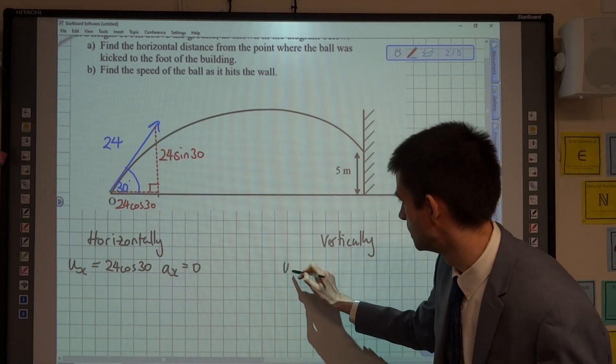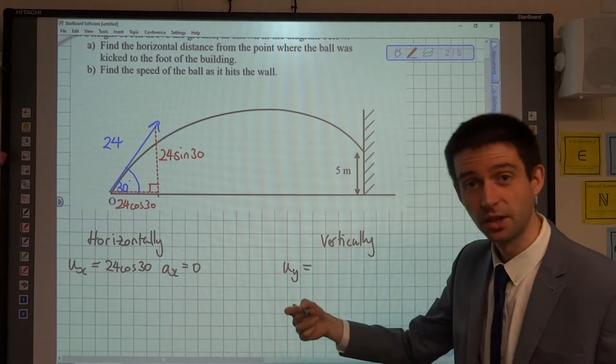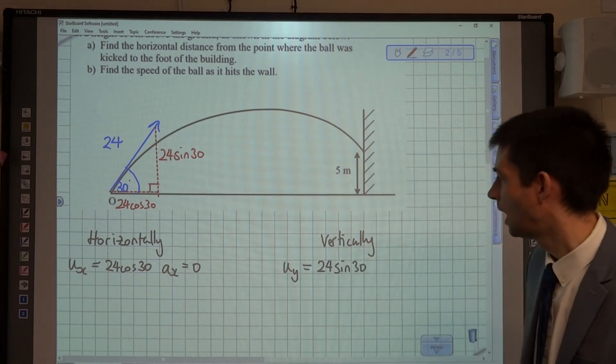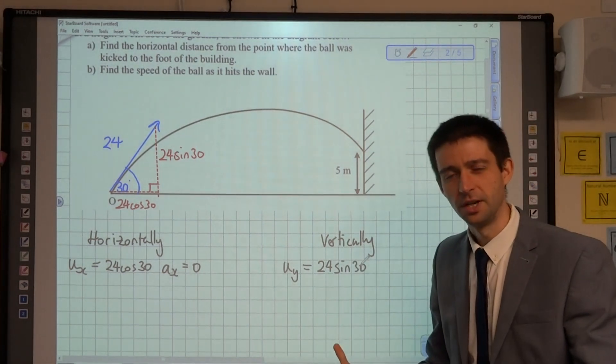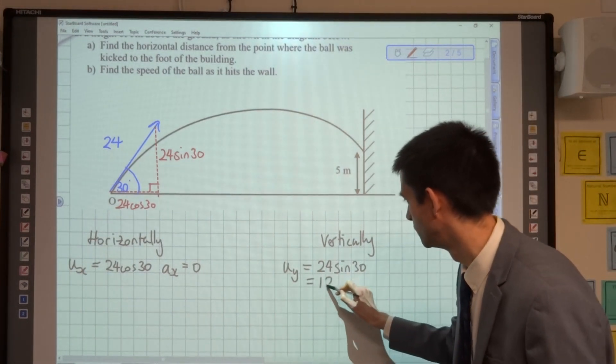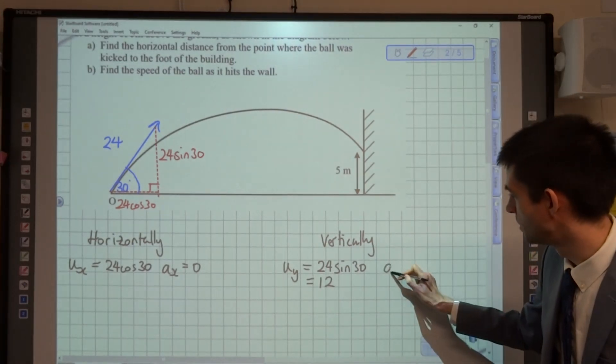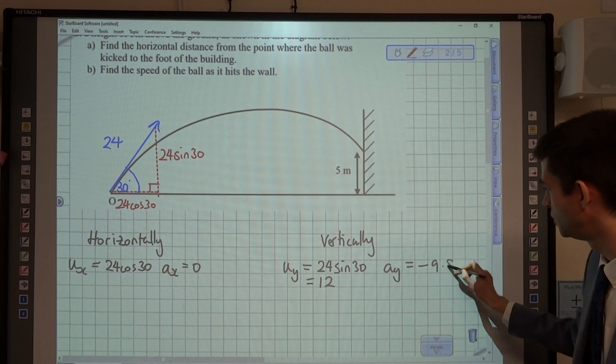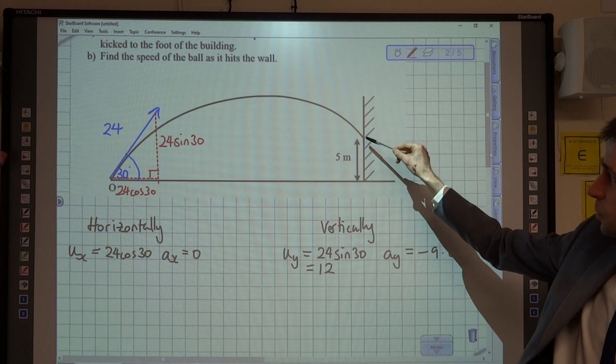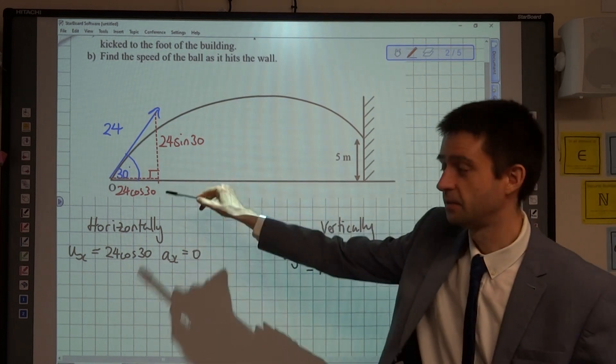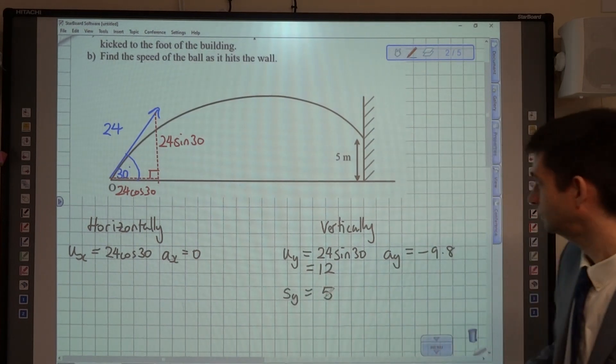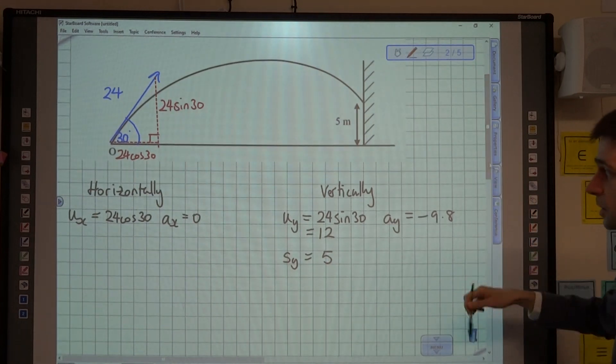Vertically, we know that the initial velocity vertically, so we call that uy, is 24 sine 30. And because you know your exact trig values, you're screaming at the screen, sine 30 is a half, Mr. Sutherland, so just write 12. So the initial velocity vertically is 12. We know that the acceleration is negative 9.8 because it's due to gravity. We don't know the time, but we do know the displacement, because we're looking for this point here where it's 5 metres above the starting point. So we can say that Sy is equal to 5.